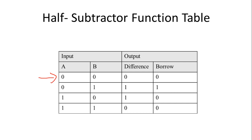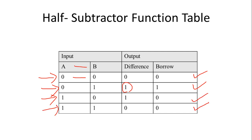Let's interpret this truth table with A minus B. For the first row: zero minus zero, difference is zero and we didn't need to take any borrow. For the second row: zero minus one — zero is the smaller number, one is larger, so we need to take a borrow of magnitude two. Two minus one equals one, so difference is one and borrow is one. Third row: one minus zero is one, no borrow. One minus one is zero and borrow is also zero.